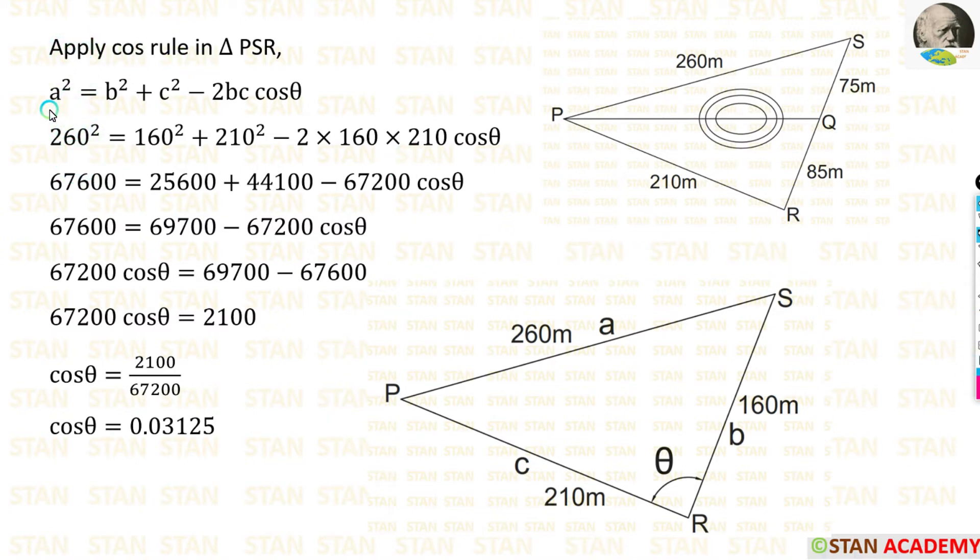You can see the cosine rule here. A² = B² + C² - 2BC cos θ. We have to fix A, B and C on the three sides of the triangle. We have to be very careful that A must be fixed opposite to the angle theta.